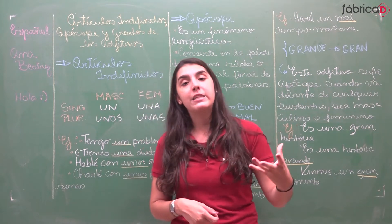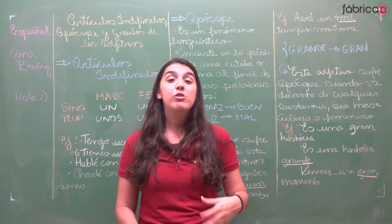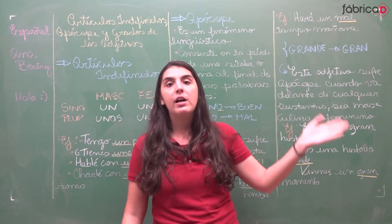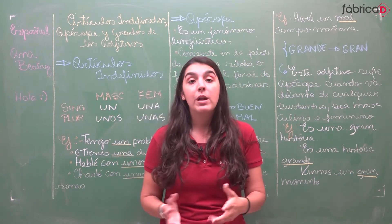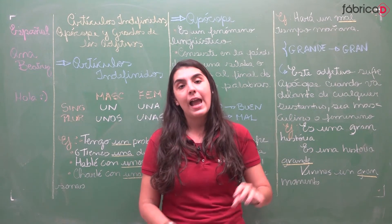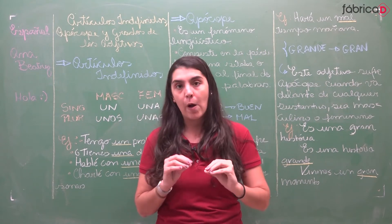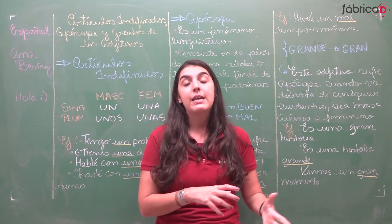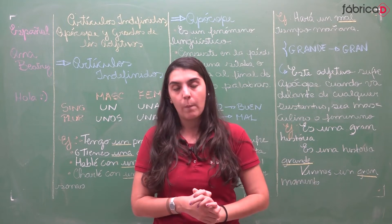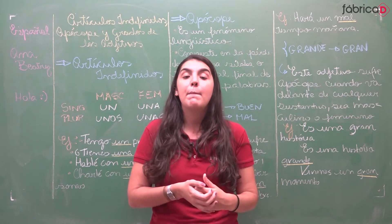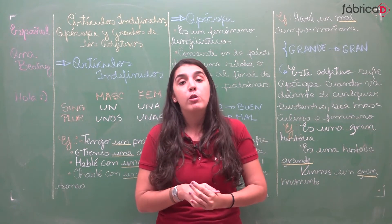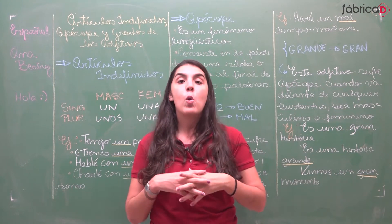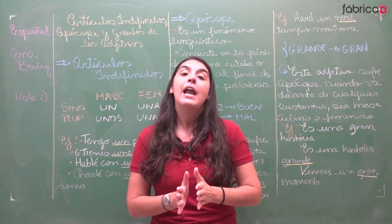Como são essas questões? Como elas aparecem de fato? Podem aparecer em questões de lacunas, para preencher a lacuna com a melhor forma que se adeque — com a melhor forma do 'grande', do 'malo', do 'bueno'. Ou é comum encontrar questões que já te indiquem uma palavra que sofre apócope e aí perguntam: 'assinale a opção que também sofre do mesmo fenômeno linguístico?' ou 'que também é apocopada?' São questões bem diretas que exigem do aluno saber o uso da apócope. O próximo vídeo vem com outros casos e depois um resumão geral de quando uso e quando não uso, sempre com exemplos.